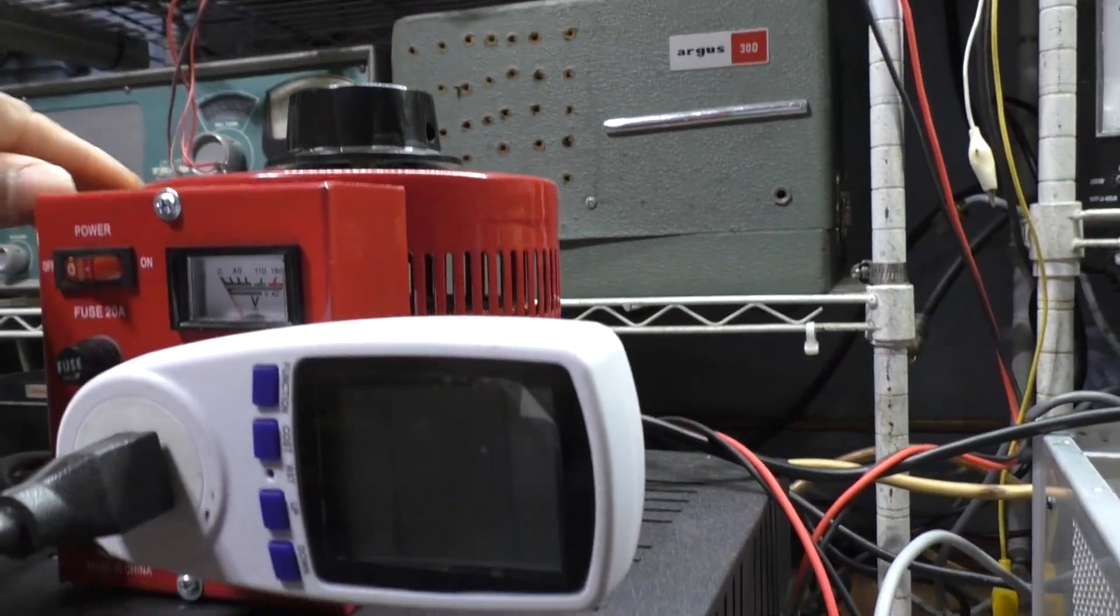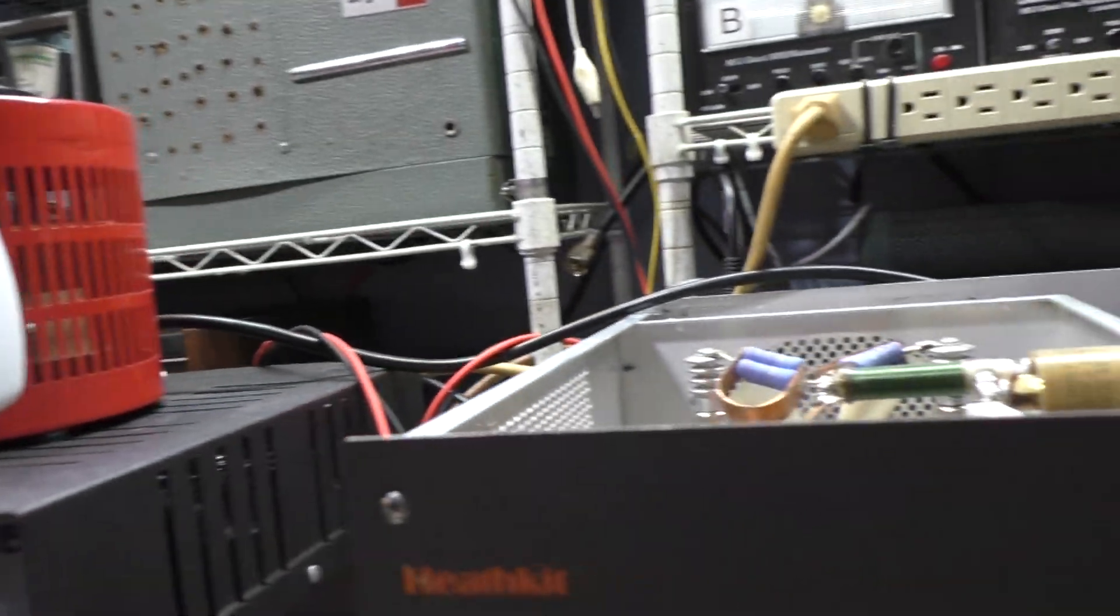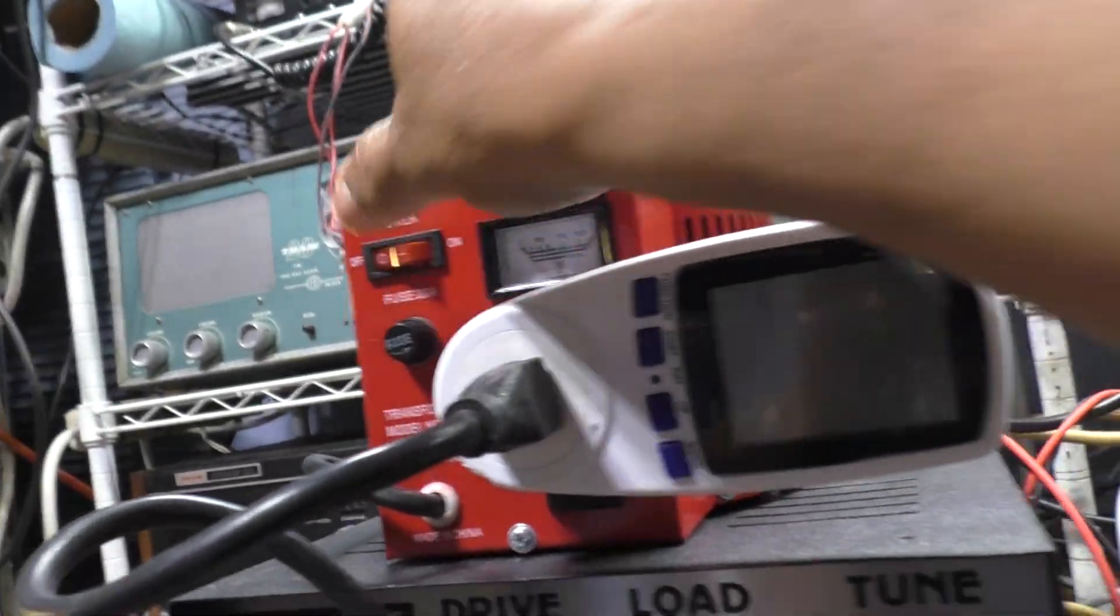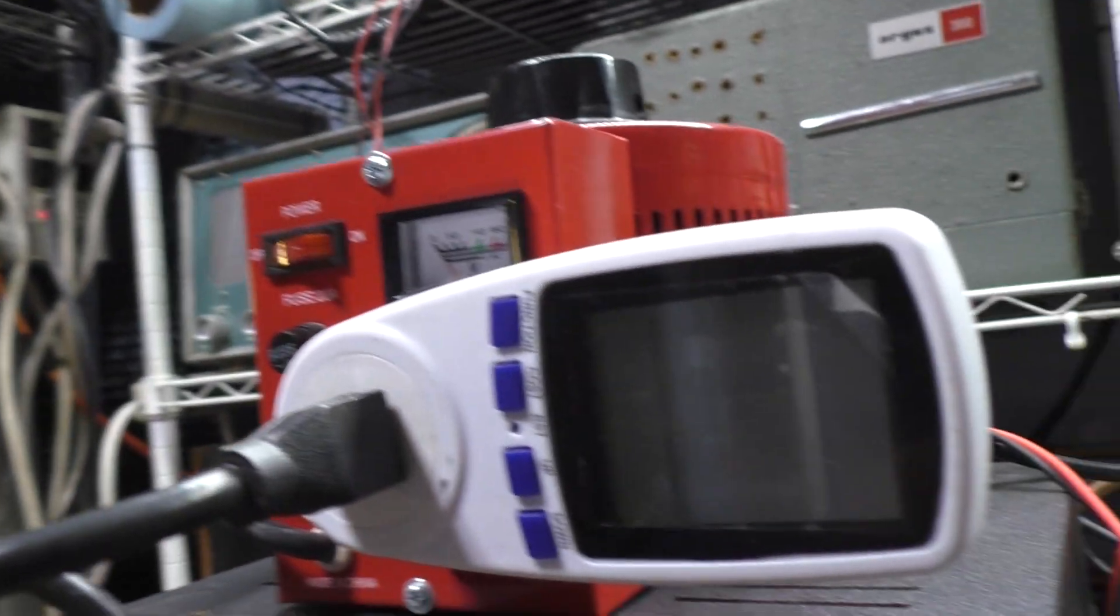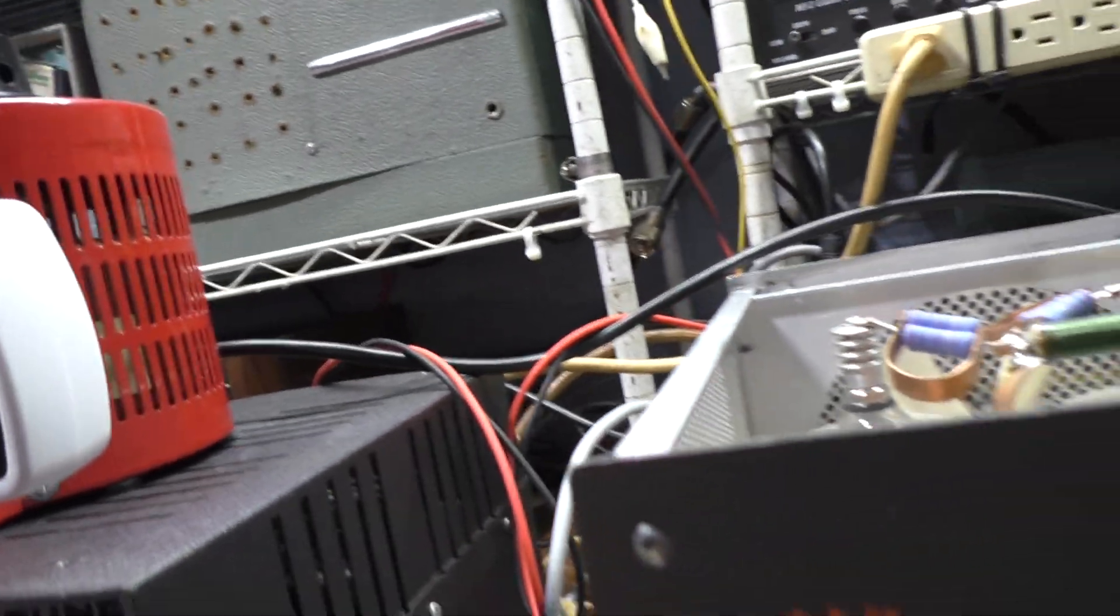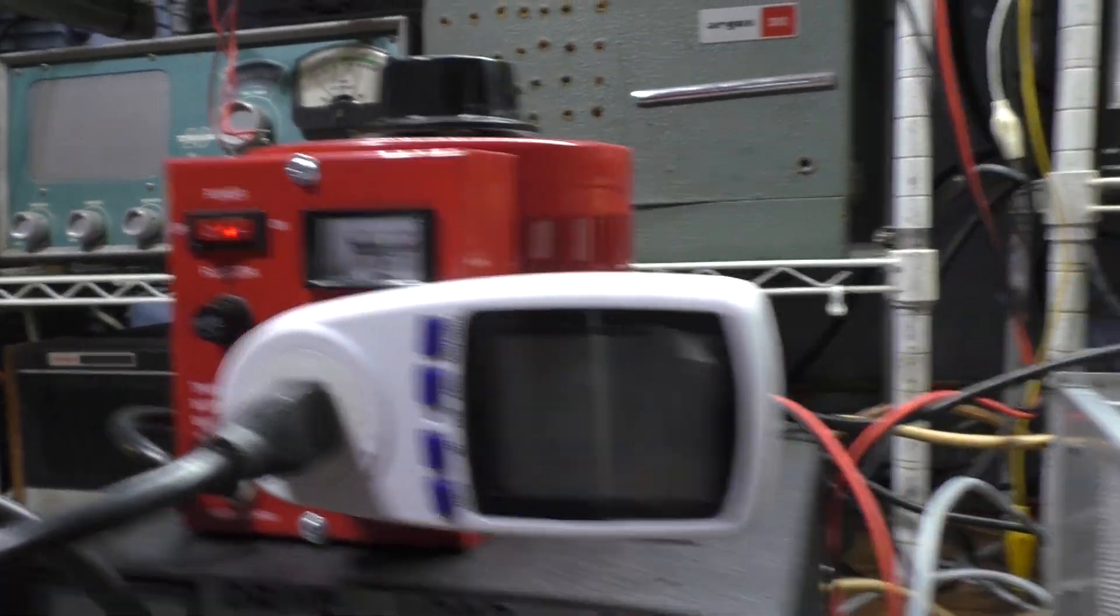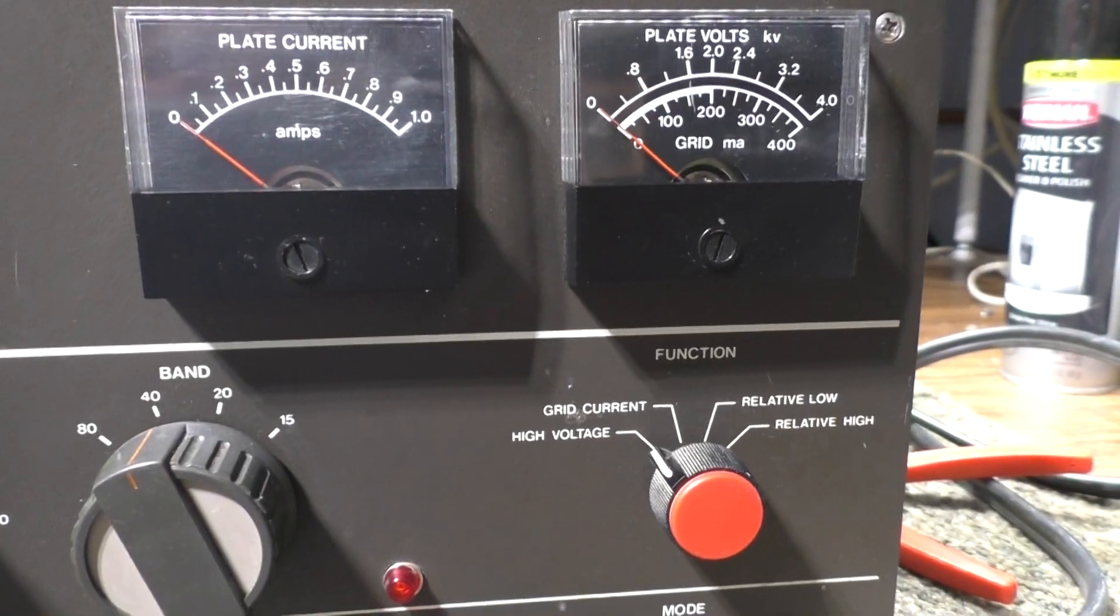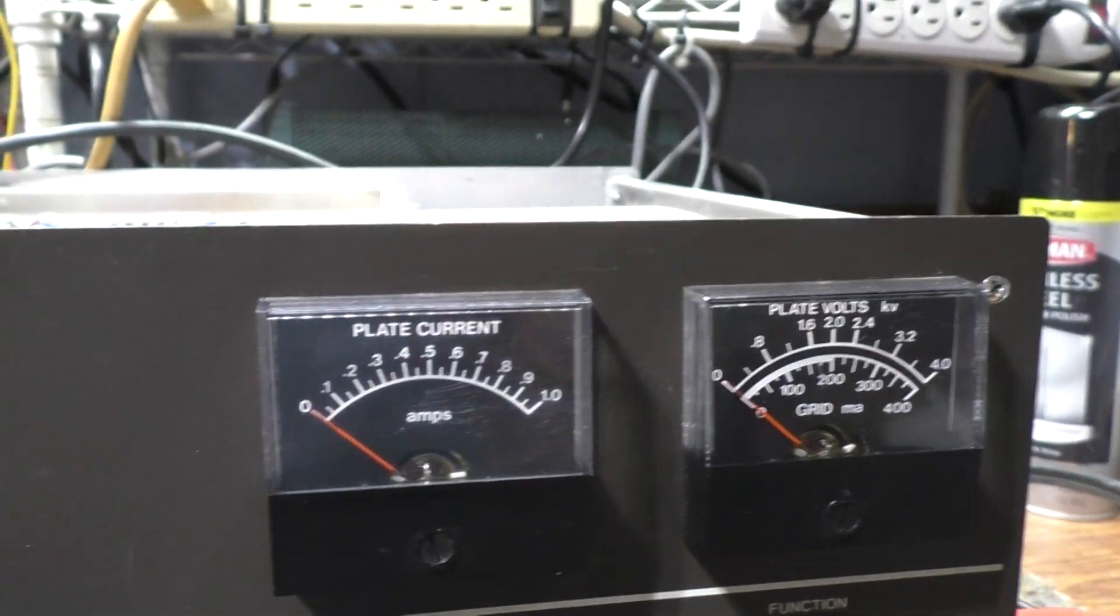We're dialed all the way down. Turn on the variac. Got it off somewhere else, hold on. Too many switches. There you go, that one's on. Now that one's on, and we're going to slowly dial it up. As we dial up the variac, we should see the high voltage dialed up also.